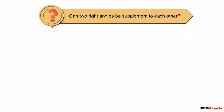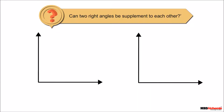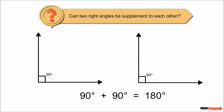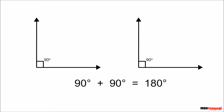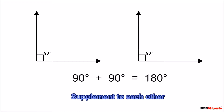Can two right angles be supplementary to each other? Since the measurement of a right angle is 90 degrees, if we add two right angles we get a sum of 180 degrees. Thus, two right angles will be supplementary to each other.